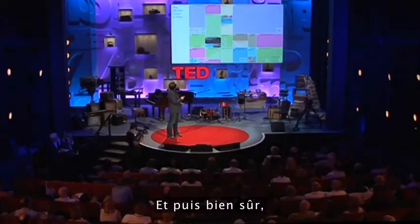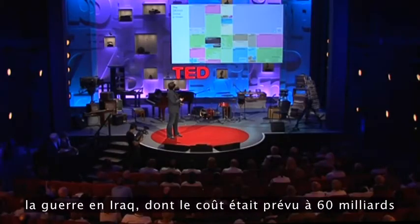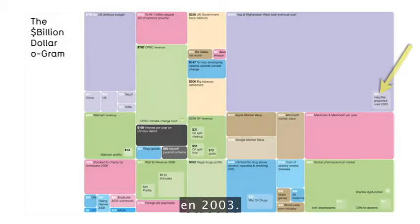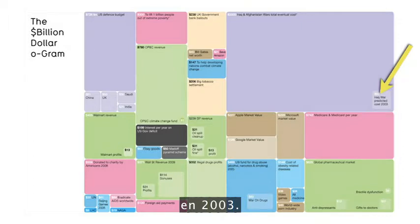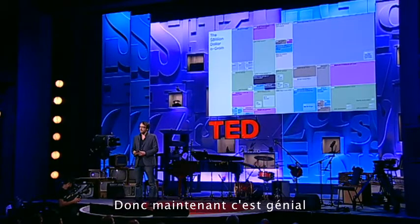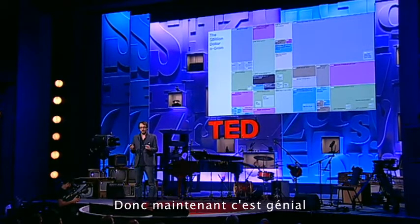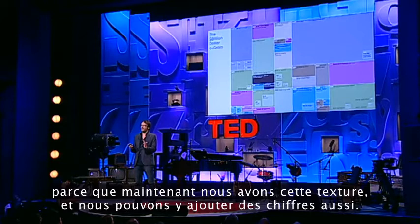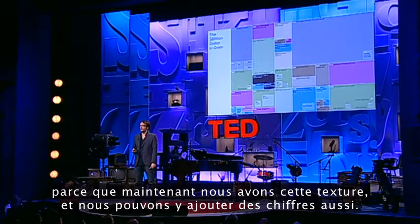And then of course the Iraq war, predicted to cost just 60 billion back in 2003, and Afghanistan and Iraq mushroom now to 3,000 billion. So now we have this texture, and we can add numbers to it as well.